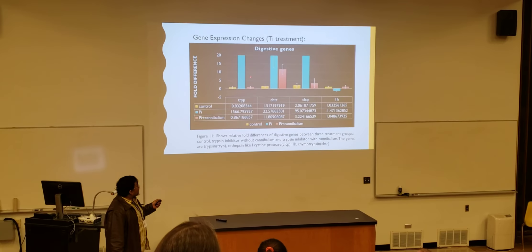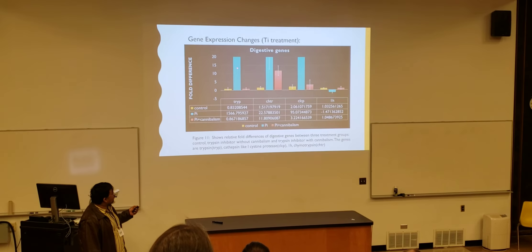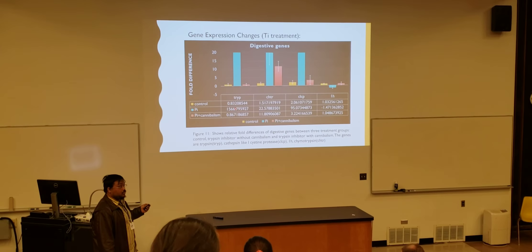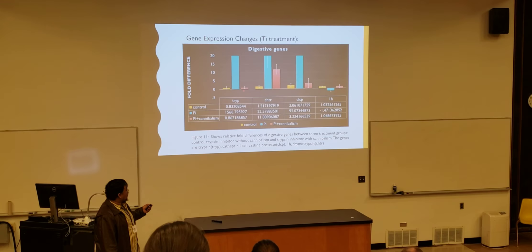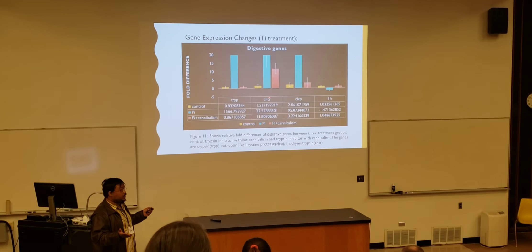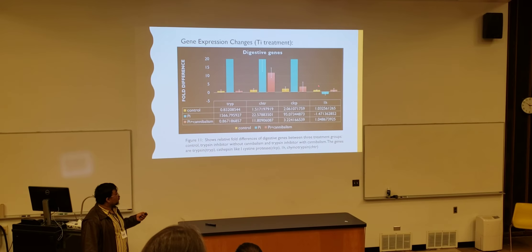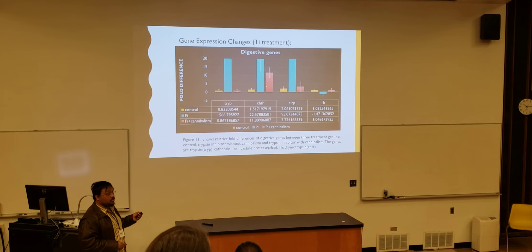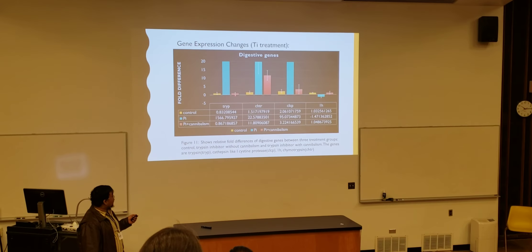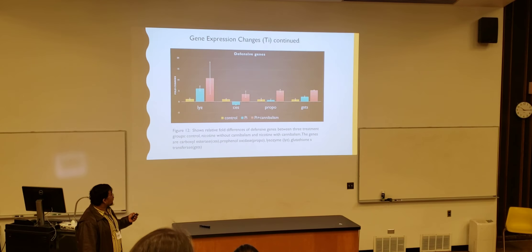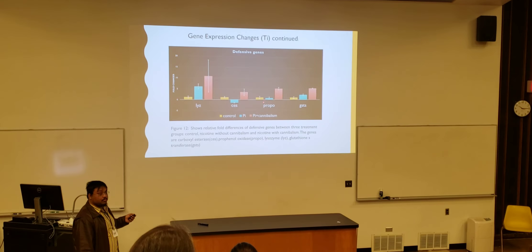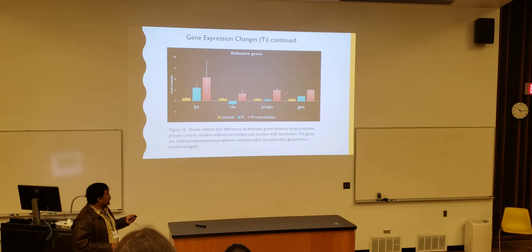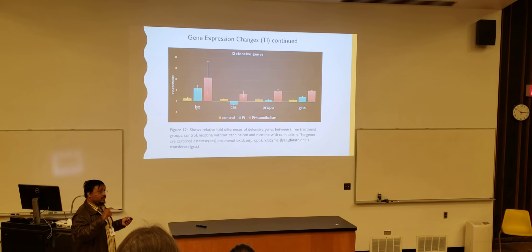With trypsin inhibitor, we see these digestive genes first. Because it is a trypsin inhibitor, the gene expression of trypsin is massively upregulated — a difference of 1,566-fold. Control and cannibalism both come down to one. Chymotrypsin shows the same trend we saw with nicotine. CLCP is again upregulated in the presence of trypsin inhibitor. What is the key trend? The trend, if we focus on the direction of change, is the same whether we use nicotine or trypsin inhibitor. So this result is influenced more by cannibalism than by the specific toxin. The defensive gene expression — carboxyl esterase, GST, propanol oxidase — is exactly the same pattern as we saw with nicotine, and this is independently notable because it is consistent across both toxins.